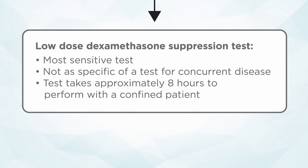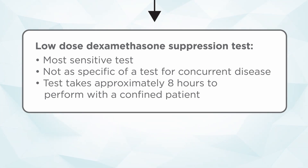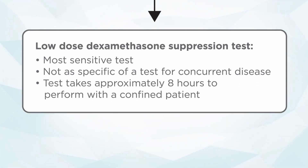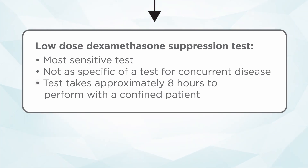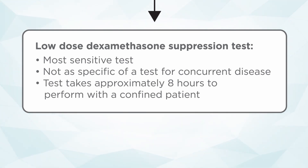The other confirmatory test is the low dose dexamethasone suppression test. This has the advantage of being the most sensitive of the tests, meaning that if you have a dog with canine Cushing's disease, you're more likely to pick up the disease with this test. The disadvantage is that it's probably not as specific — if you have a diabetic patient, you have a higher chance of a false positive. But otherwise, it should be your go-to test. The other disadvantage is that it is a full eight hours. During that time, the dog has to sit in a cage except for bathroom breaks, because you don't want him or her getting excited and running around — you really need to maintain a baseline stable stress level.